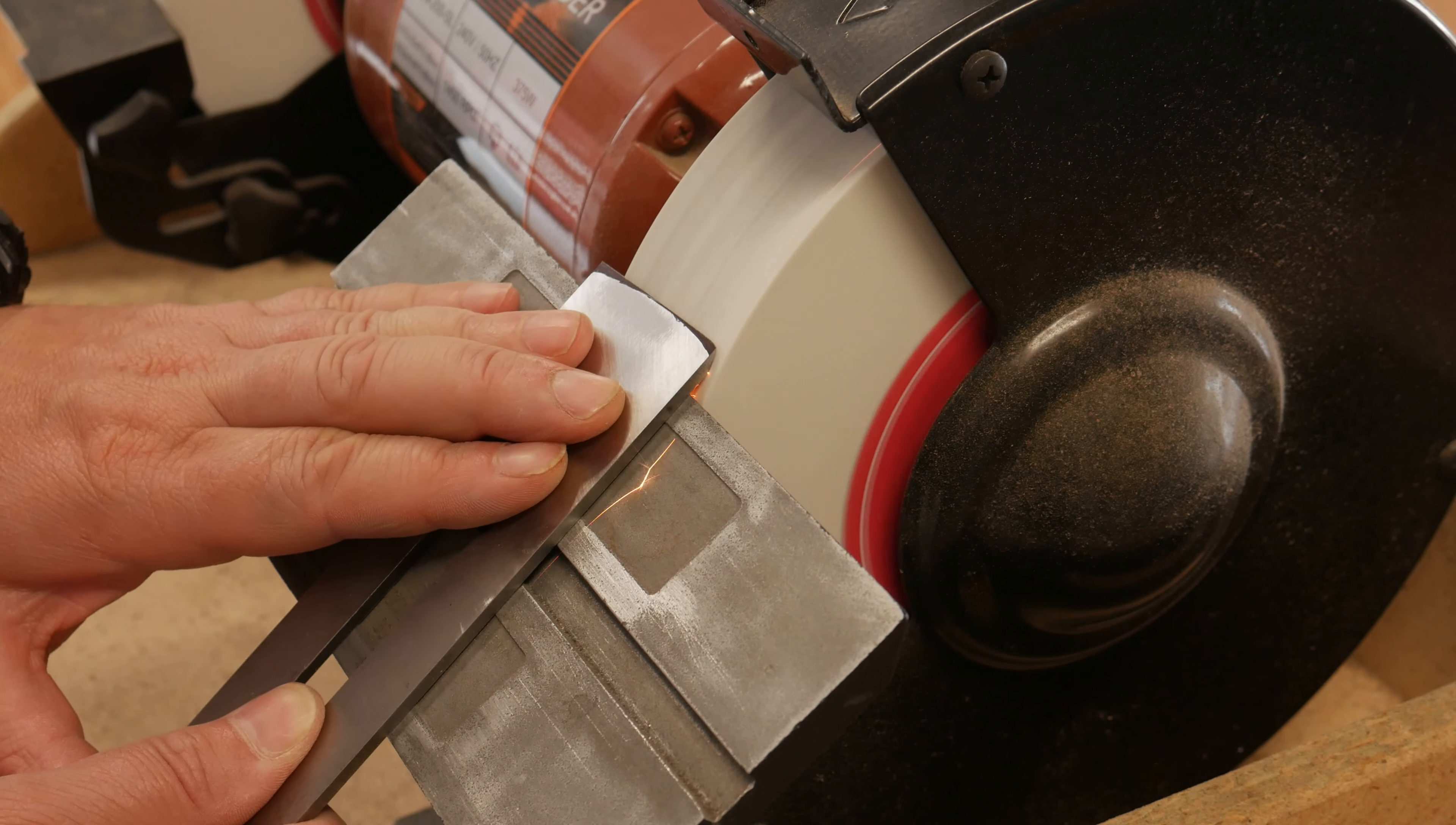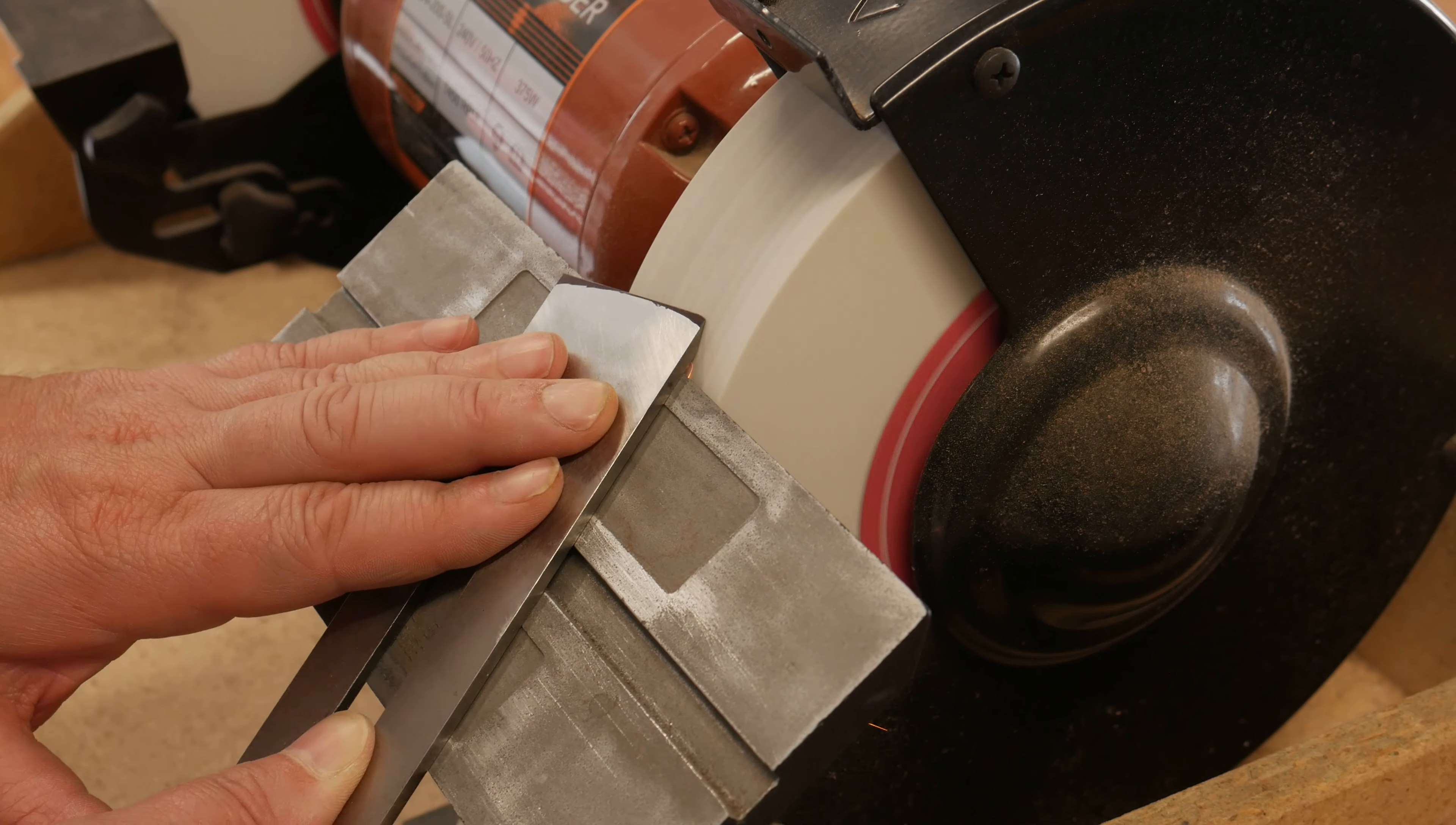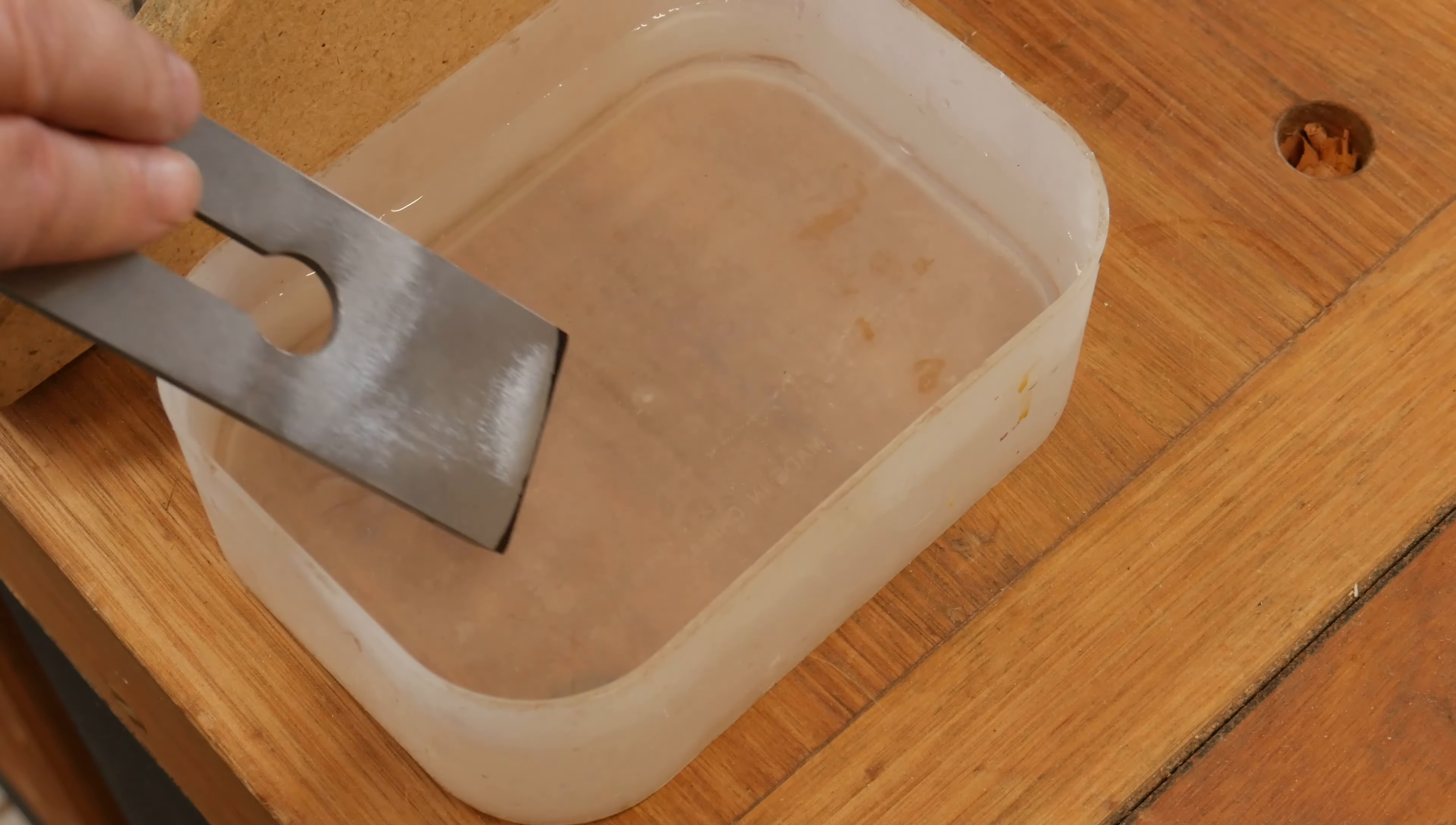However, I have a bench grinder and I am not that enthusiastic to do everything by hand, so I'm going to use it. With the angle set at 30 degrees, I slowly grind away until I achieve the radius marked out on the blade, remembering to cool the blade down as the heat will destroy the edge.